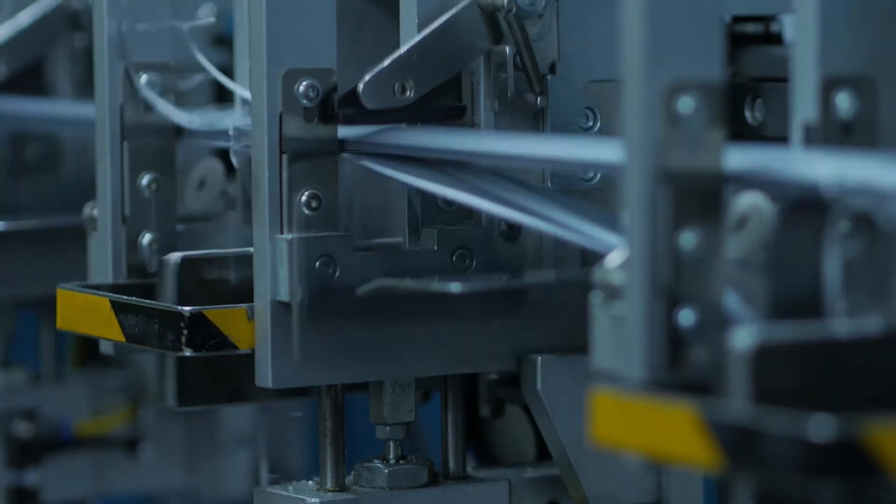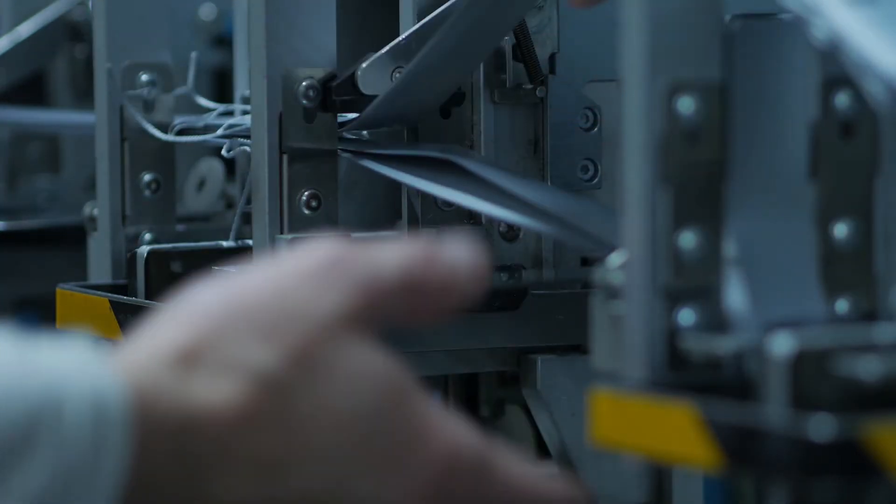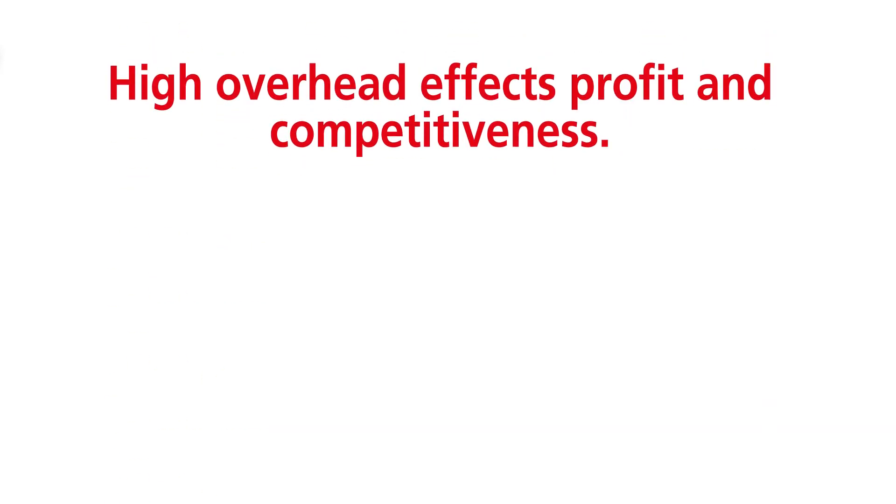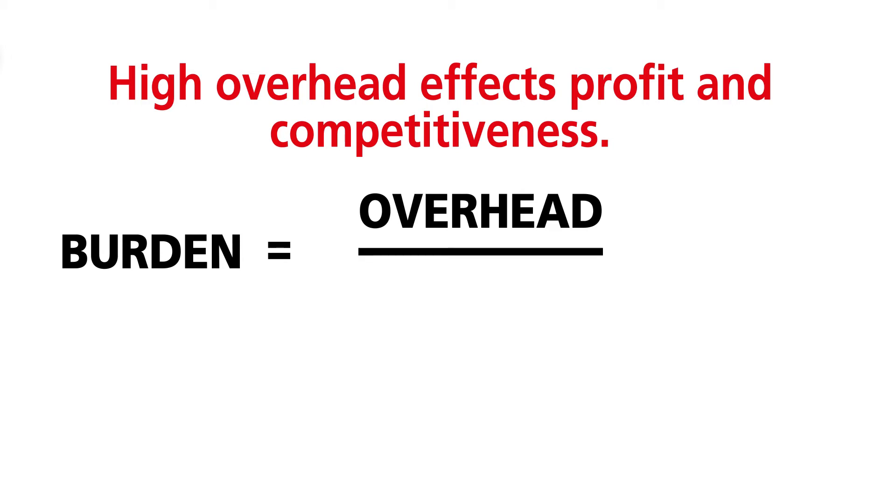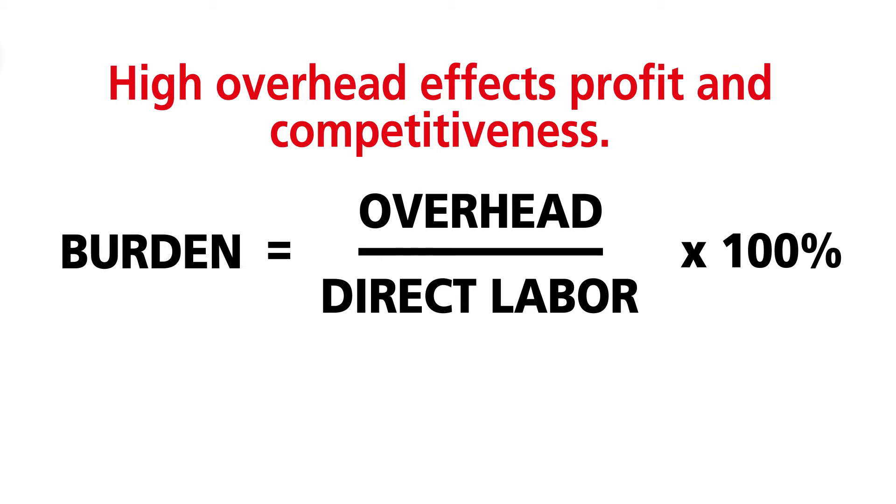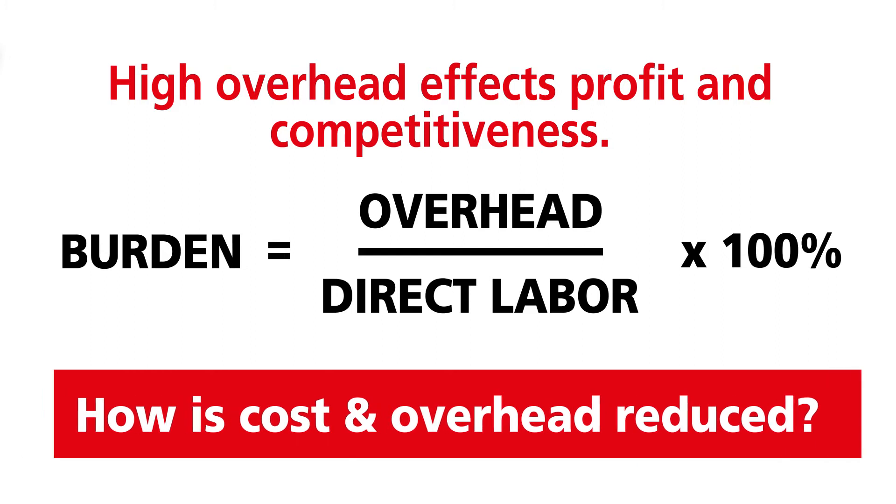Manufacturing managers have a battle to reduce overhead costs. The reason is obvious. High manufacturing overhead has a dramatic effect on profit and competitiveness. Average burden rates, this is the ratio of overhead costs to direct labor costs, are 150% to 250%, with some plants' burden rates as high as 1,000%. So how is cost and overhead reduced? The issue with overhead reduction is how it's done. It's often in response to poor earnings and provides short-lived savings.